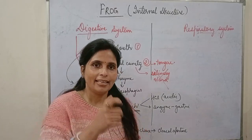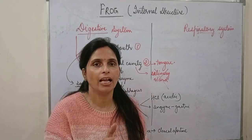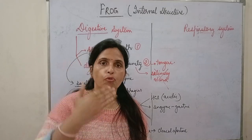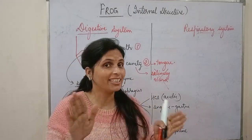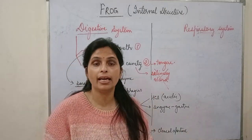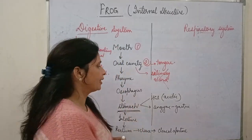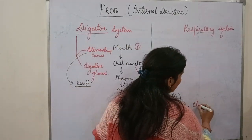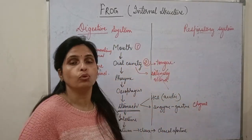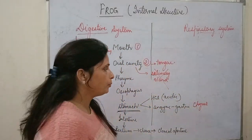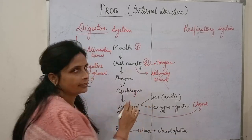The gastric juice helps the food become partially digested inside the stomach. This partially digested food is called chyme. This chyme then moves from the stomach to the intestine.